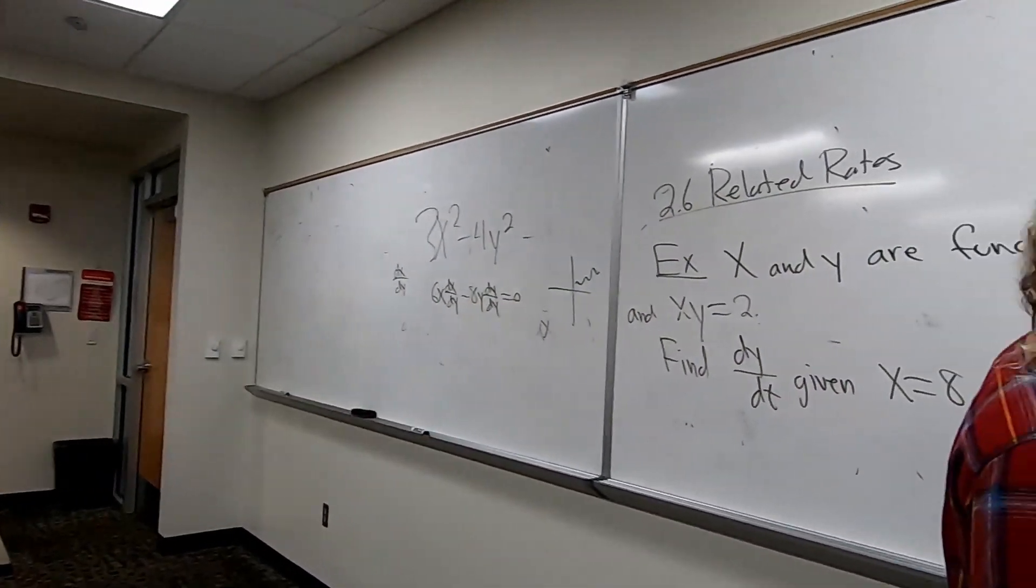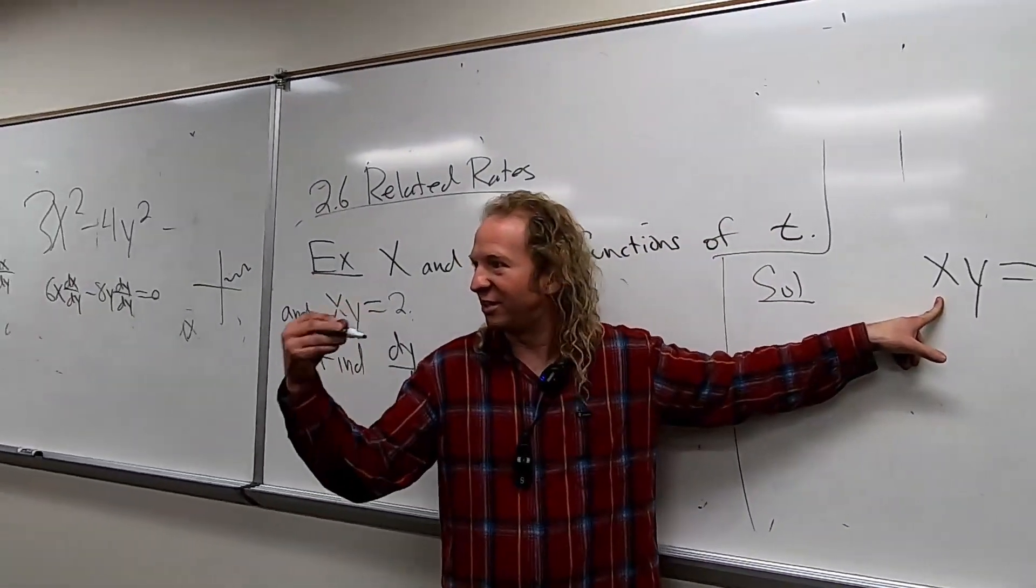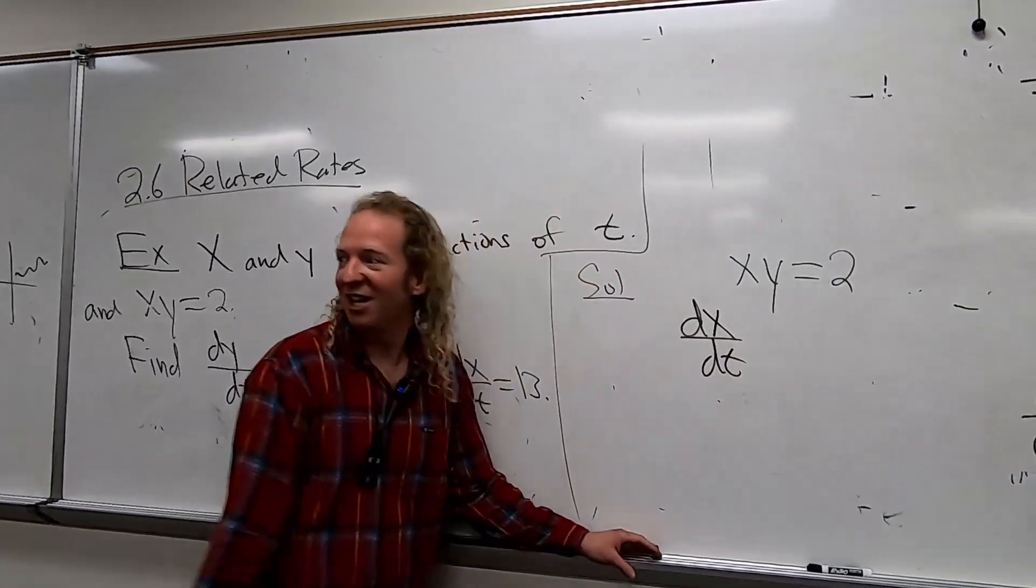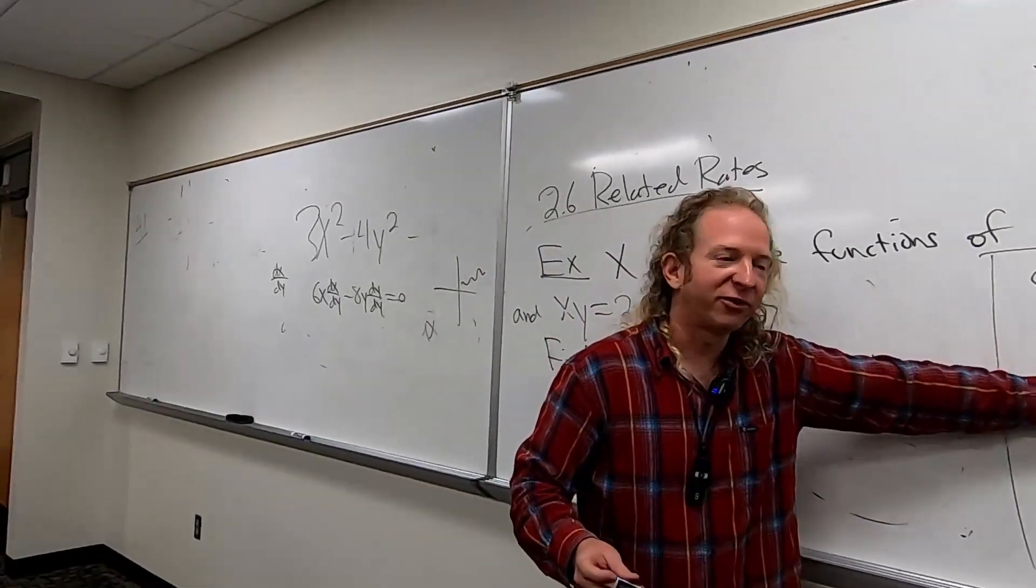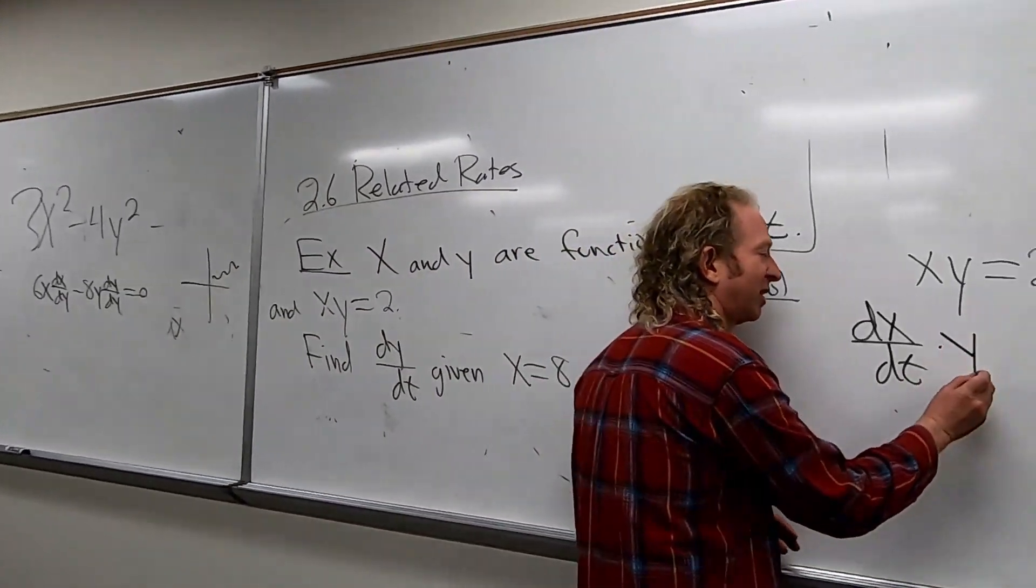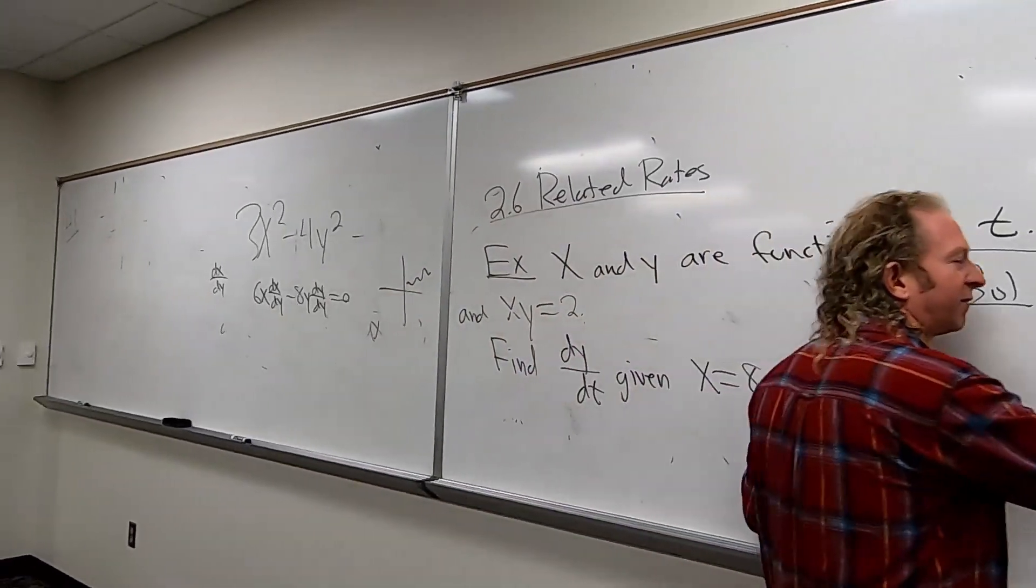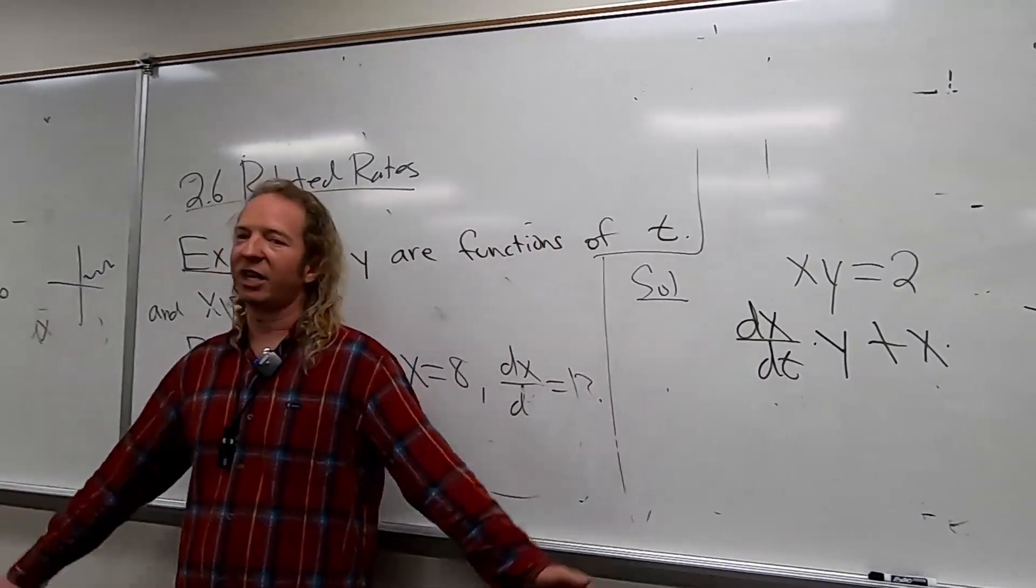So taking the derivative with respect to t, the derivative of the first is dx/dt, right? It's the derivative with respect to t. That's the derivative of the first times the second plus the first times the derivative of the second. What would that be?